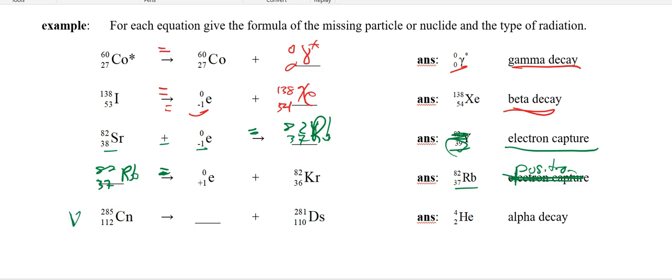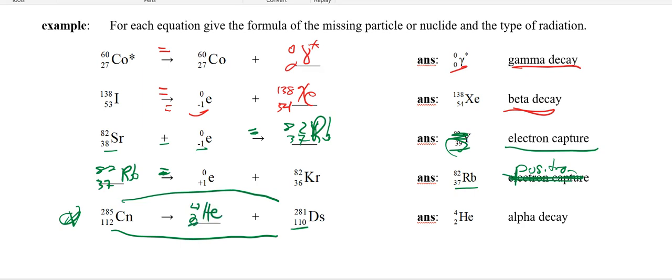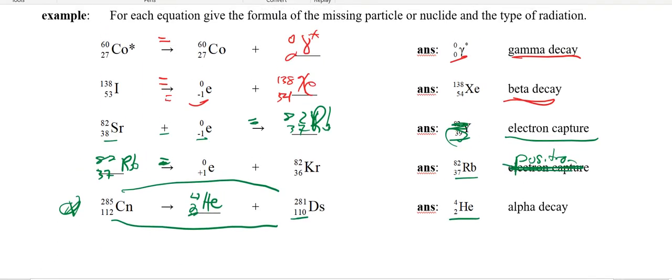Our last practice problem: copernicium, one of the big guys — 285, 112. We've got 110 over here. If the mass is changing and the atomic number is changing, we need to change it by 4 on top and 2 on the bottom. That has to be helium because of the 2. That's alpha decay. Follow the atomic number, follow the atomic masses — the atomic number, the bottom number, determines the symbol.